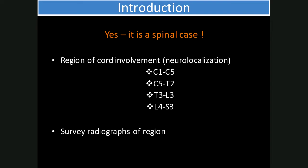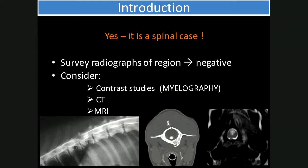But if what is seen on the radiograph is only an incidental finding, or potentially the radiographs are negative, then one can move on to more advanced types of imaging. Options include contrast studies like myelography, CT, or MRI.